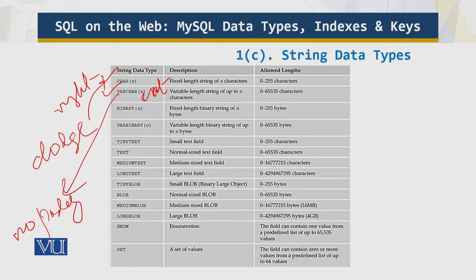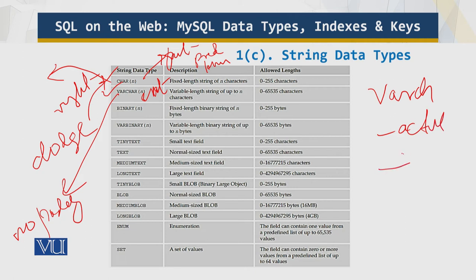VARCHAR character fields save you disk space, but don't be tempted to use VARCHAR for every string. The MySQL server processes CHAR type fields much faster than VARCHAR, because with CHAR the length is predetermined. VARCHAR takes more disk space because it has to store the length of each string in one or two additional bytes. When you have millions of records, these things make a big difference.